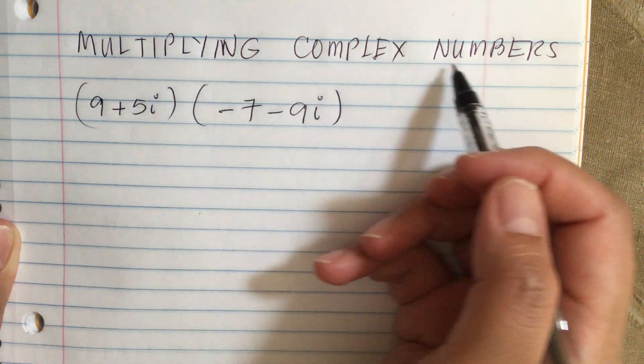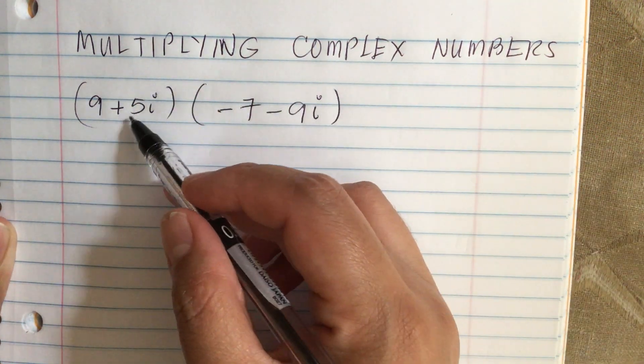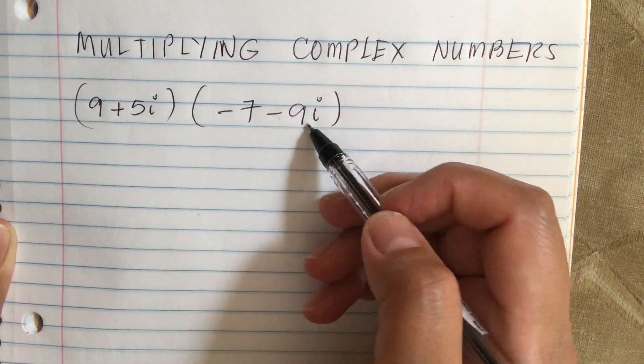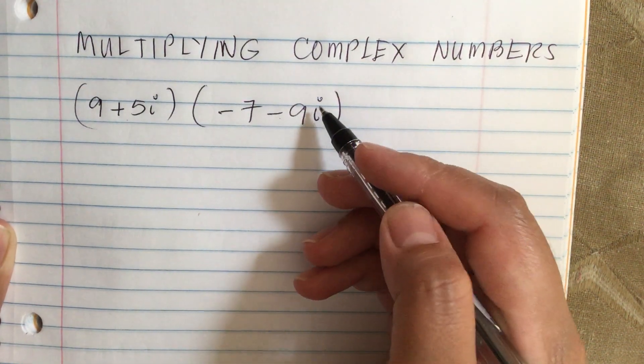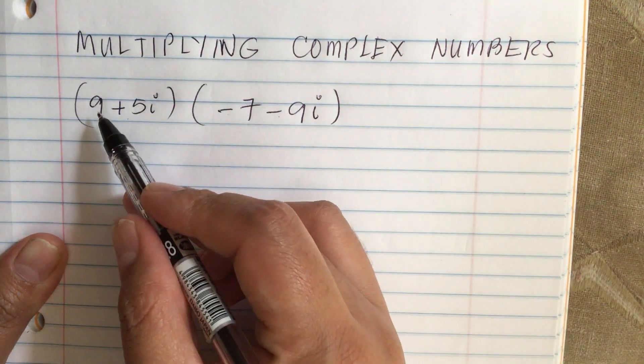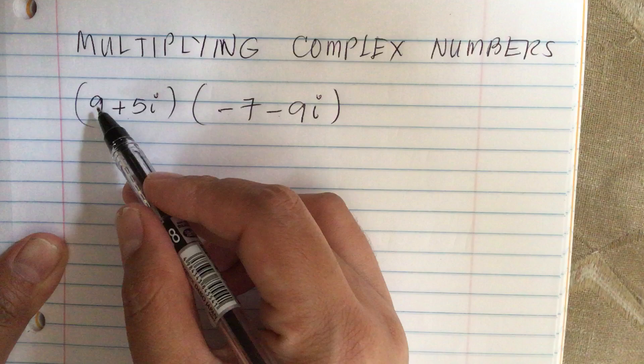Multiplying complex numbers: we have 9 plus 5i times minus 7 minus 9i. So we first multiply the first times the first.